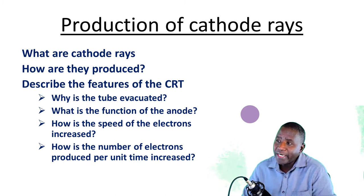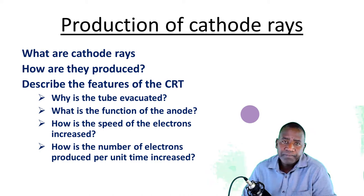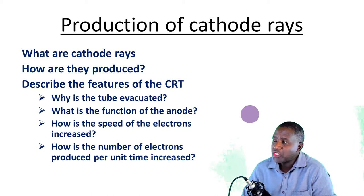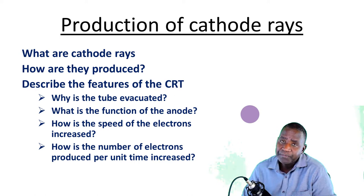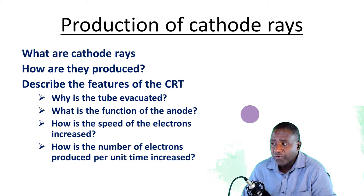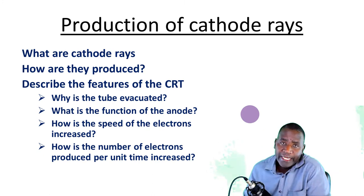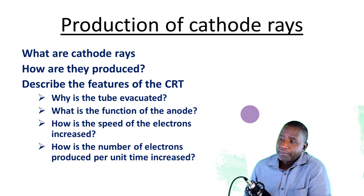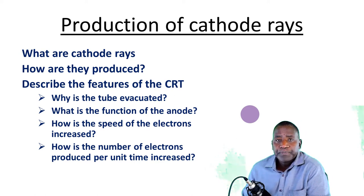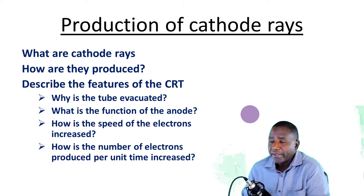Before we delve deeper into the cathode ray oscilloscope, we would like to consider the following questions: What are cathode rays? How are they produced? Can we describe the features of the cathode ray tube — why is the tube evacuated, what is the function of the anode or anodes, how is the speed of electrons increased or decreased, and how is the number of electrons produced per unit time increased or decreased?